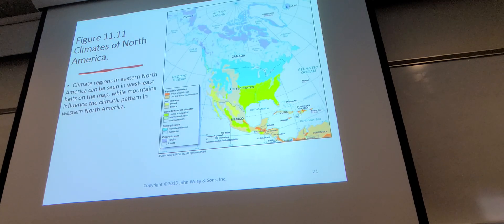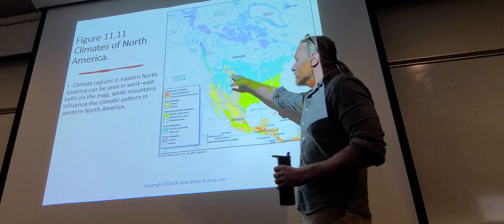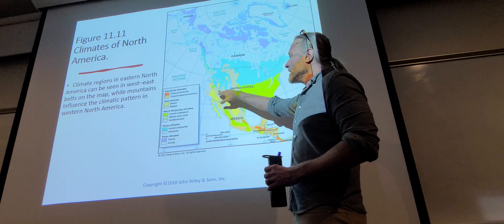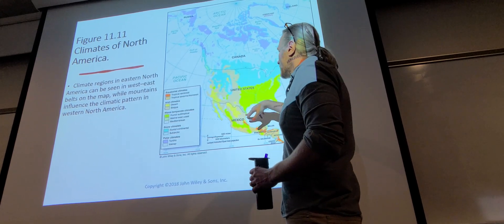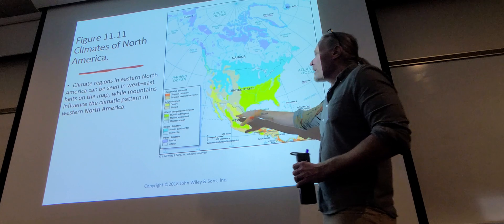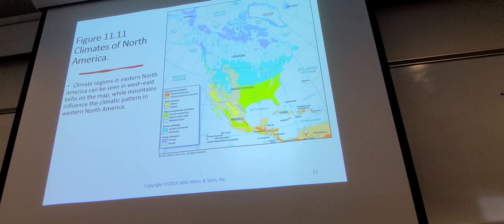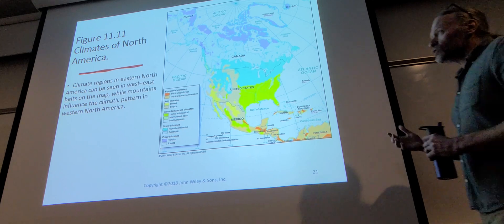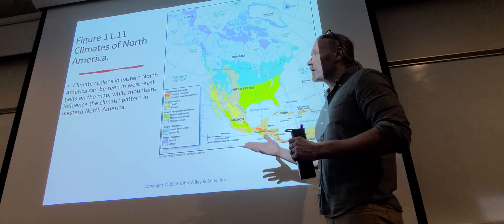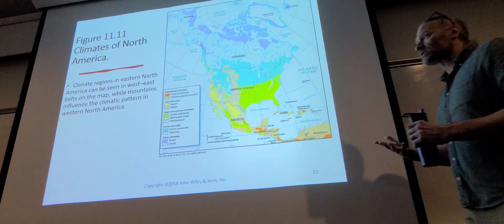Looking at climates in North America — you can see this whole area on the other side of the rain shadow has obviously some deserts and then steppe climates. When we talk about steppe climates, those are places where you can have good agriculture if you irrigate, but you've got to be careful because it still tends to be dry and you can over-utilize those resources.